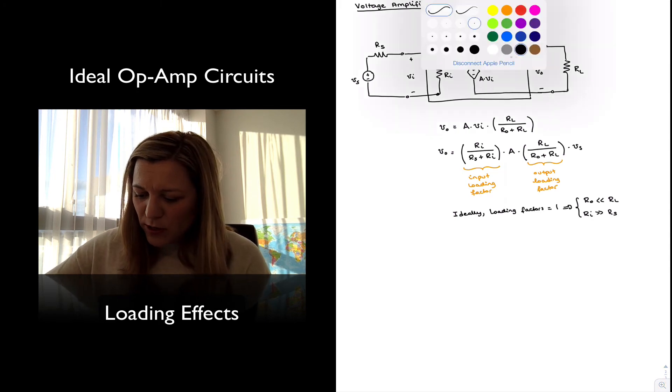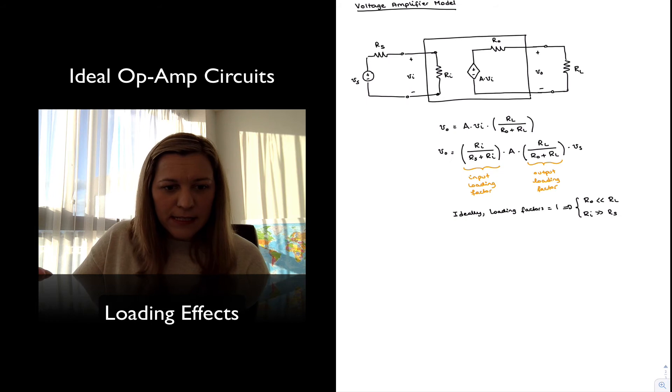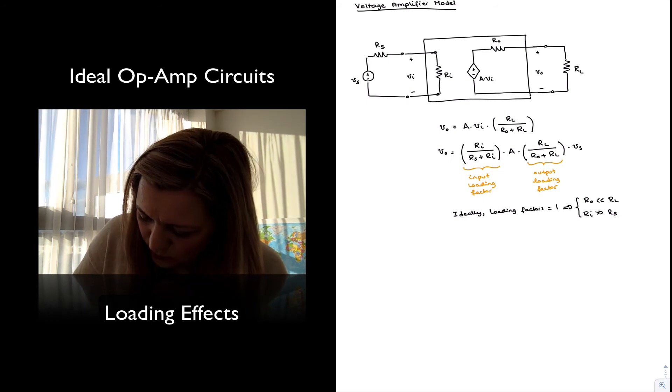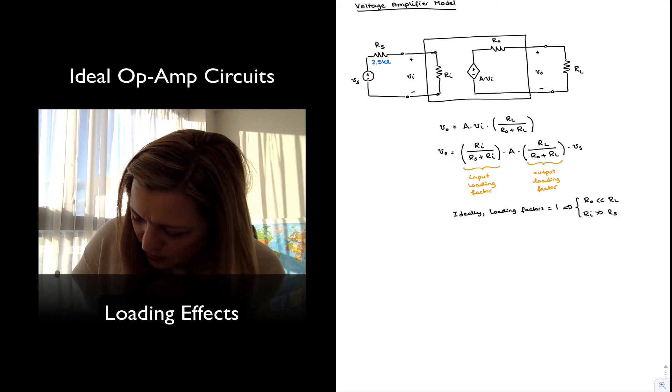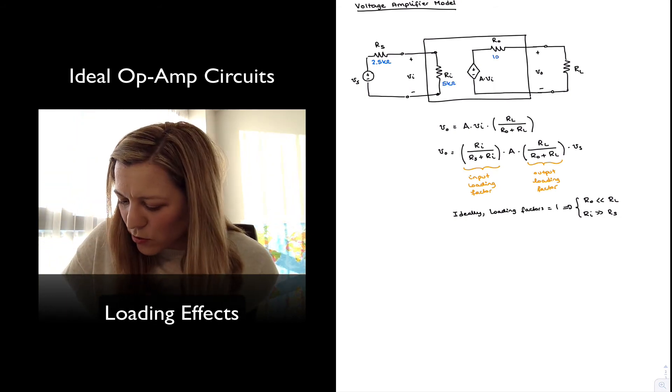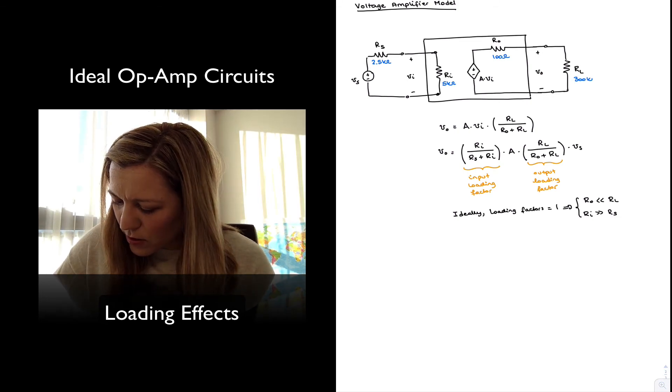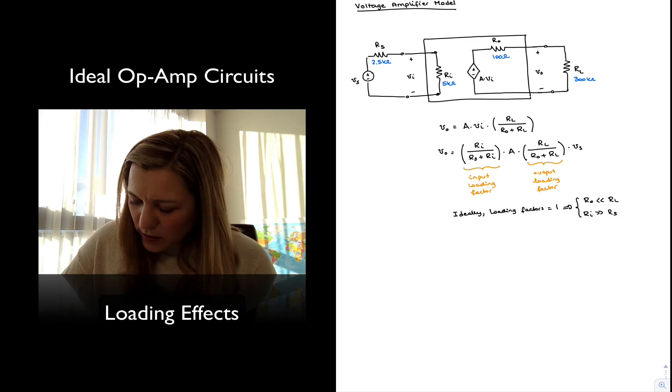For example, let's consider a practical example with values in which RS is 2.5 kilo-ohms, R_in is 5 kilo-ohms, R_out is 100 ohms, the load is 300 kilo-ohms, and the nominal gain is 200.